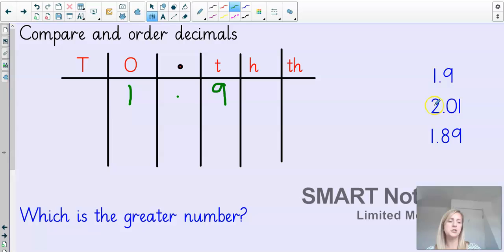So now I've got 2.01. I've got my decimal points there. The digit in front of the decimal point is a 2. The digit after the decimal point is a 0. And then I have a 1. And last but not least, 1.89. Put my decimal point in. The digit before the decimal point is a 1. The digit after the decimal point is an 8. Followed by a 9.